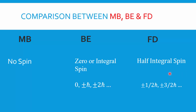Particles such as electrons and protons have half-integral spin, meaning spin values of ±(1/2)ℏ, ±(3/2)ℏ, ±(5/2)ℏ, and so on. These are half-integer multiples of ℏ. So particles with spin values of ±1/2, ±3/2, ±5/2 (in units of ℏ) follow Fermi-Dirac statistics.